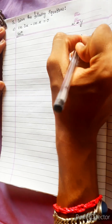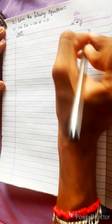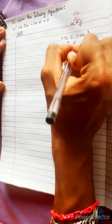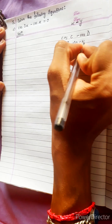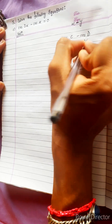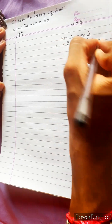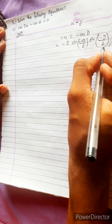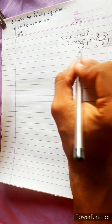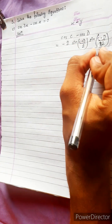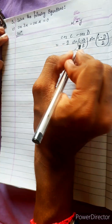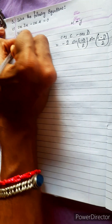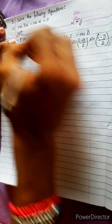cos c minus cos d. This formula is minus 2 sin c plus d by 2, times sin c minus d by 2. This is plus d minus c. This formula is used here.